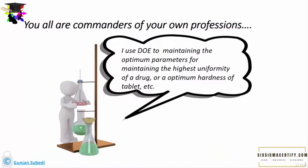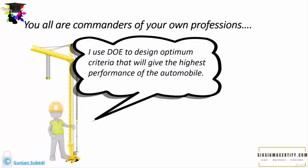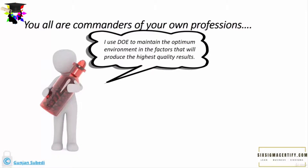The war and the cannon example are just examples. You may be in various commanding positions in your own war of professional journey. If you are a formulation scientist, you may be concerned with maintaining optimum parameters for getting the highest uniformity of a drug or making drugs of the highest quality. If you are a civil engineer, you may be concerned with maintaining optimum parameters for increasing the strength of a building or a bridge. If you are a mechanical or automobile engineer, you may be concerned with the optimum design criteria that will give the highest performance of the automobile. Design of experiments can be used in almost any profession.